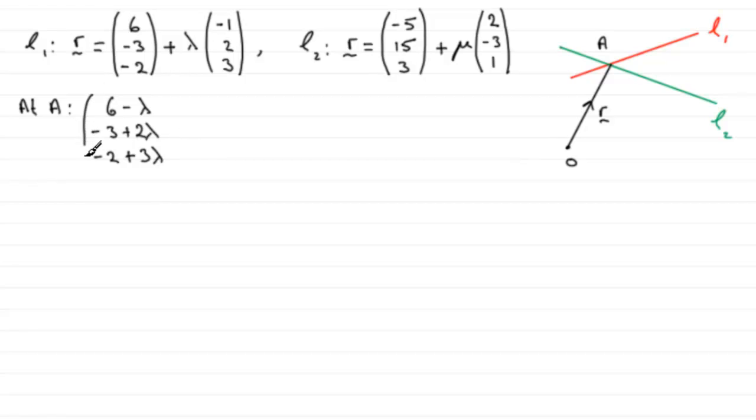We'll put that in as a column vector. And this will be equal to the same or similar kind of results that we get when we expand this. We'll have minus 5 plus 2 mu. Then for the J component, 15 minus 3 mu. And lastly, the K component, 3 plus mu. And put that in as a column vector.